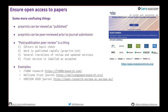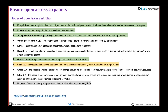The Wellcome Trust created Wellcome Open Research based on the F1000 framework — when you get funding from them you should publish there. The ERC also has Open Research Europe, their own journal, again a clone of F1000. Major funding institutions are now moving to post-publication peer review. There are different types of open access articles — preprints, post-prints, author accepted manuscripts — which can be shared through green open access routes by depositing in a repository.